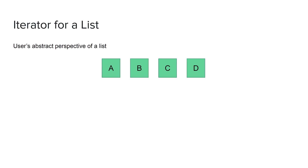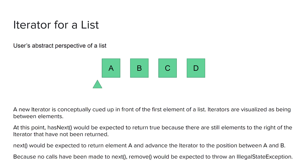Now let's see how we can visualize the activity of an iterator in relation to its collection. Starting with an abstract perspective of a list, a list is simply a sequence of elements — here we have a four-element list with elements a, b, c, and d. When we call the list's iterator method it returns a new instance of its iterator that's conceptually queued up in front of the first element. The triangle shown in this picture is our visual representation of an iterator queued up in front of element a. At this point, hasNext would return true because there are elements it hasn't returned yet.